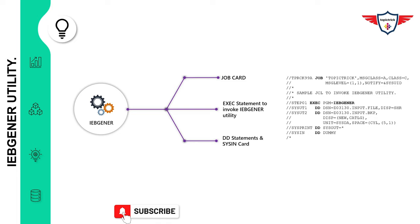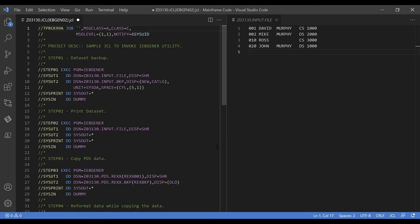Before I show the live demonstration of how you can use IBGener utility to perform various operations, let me ask an interview question. The question is: what is the basic difference between IBGener utility and IEBcopy utility? If you know the answer, write it down in the comment section. Otherwise, I'll give you the correct answer in the last section of this presentation.